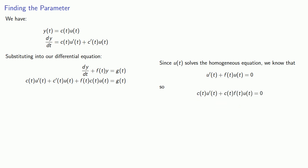So that means these terms in our differential equation add to 0 so we can get rid of them. And since we know u(t) because it's a solution to our homogeneous equation, and g(t) because it's the non-homogeneous part of our differential equation, we can solve for c'(t).